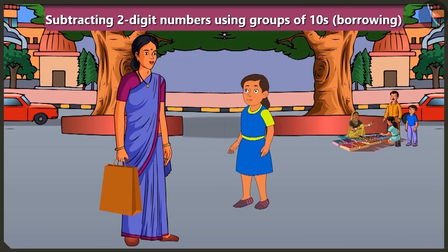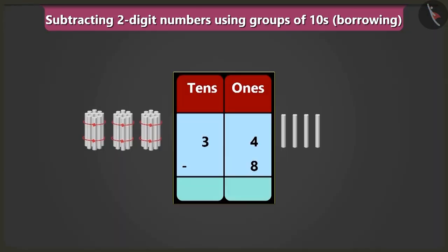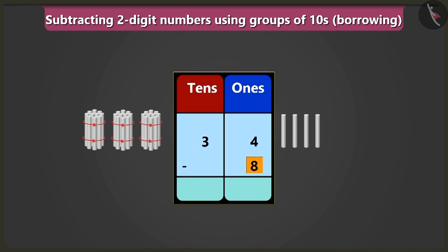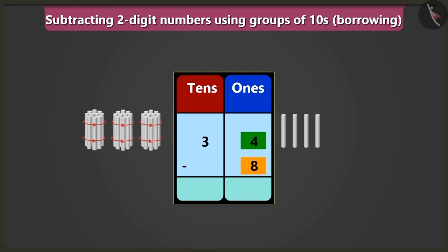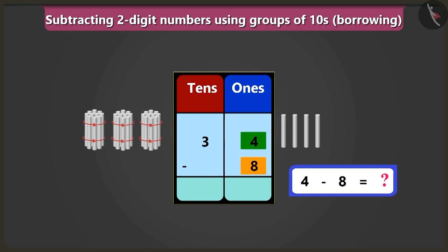How is subtraction done? Come, I will explain. To subtract eight from thirty-four, we will write thirty-four and eight in the box of ones and tens. Thirty-four means three tens and four ones. Now we have eight ones, so we will write it in the box of ones. Its box of tens will stay empty. First of all, we will have to subtract eight from four in the box of ones. But here four is smaller than eight in the box of ones. So how will we subtract eight from four?